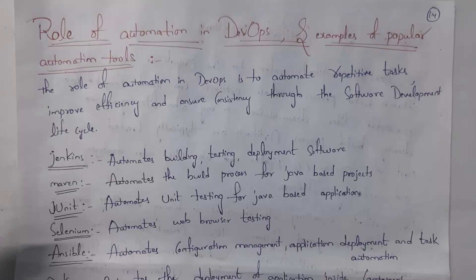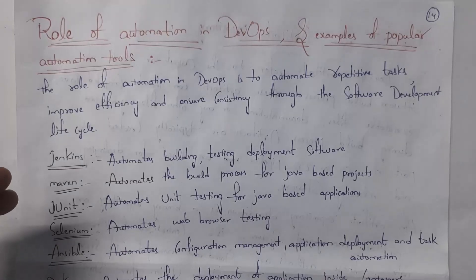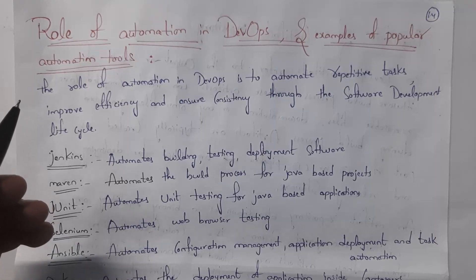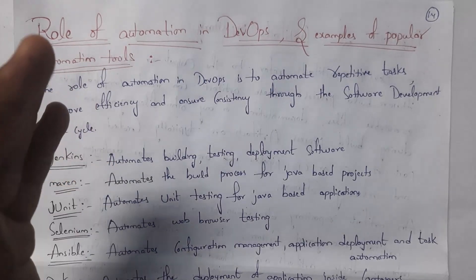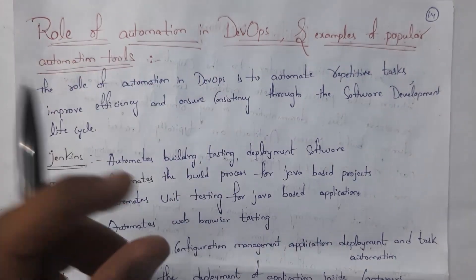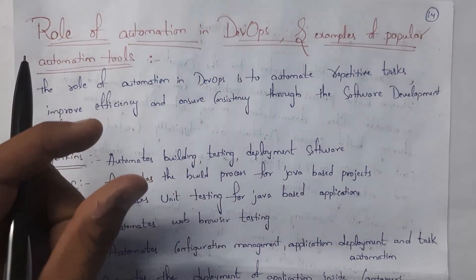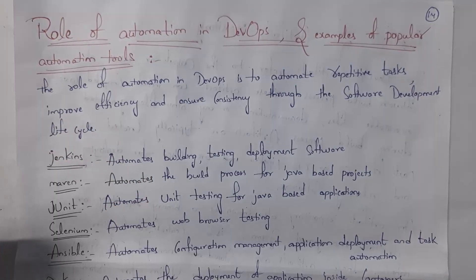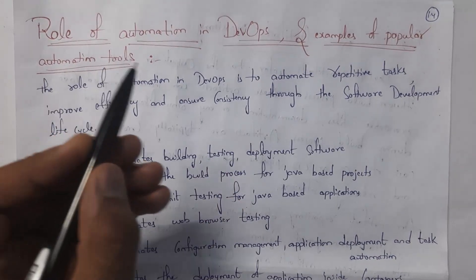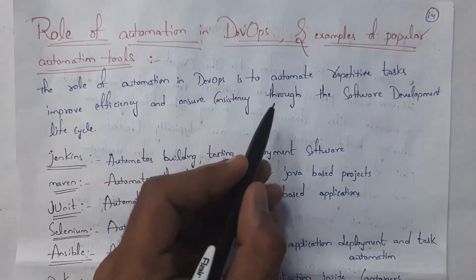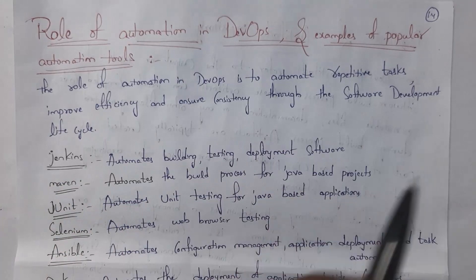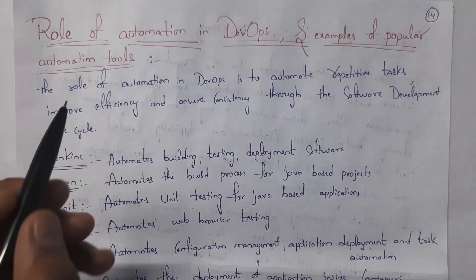Let's get started. The role of automation in DevOps is to automate repetitive tasks. For example, whenever a developer has any new code, that code is automatically compiled and executed, then tested, and if everything is working well, that code is automatically placed in the server. All this work is automated using various kinds of tools. So the role of automation in DevOps is to automate repetitive tasks, improve efficiency, and ensure consistency through the software development life cycle.